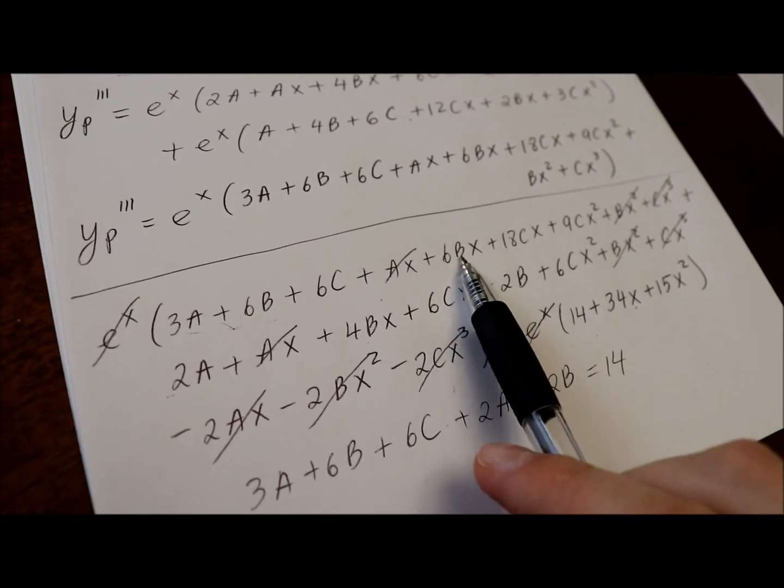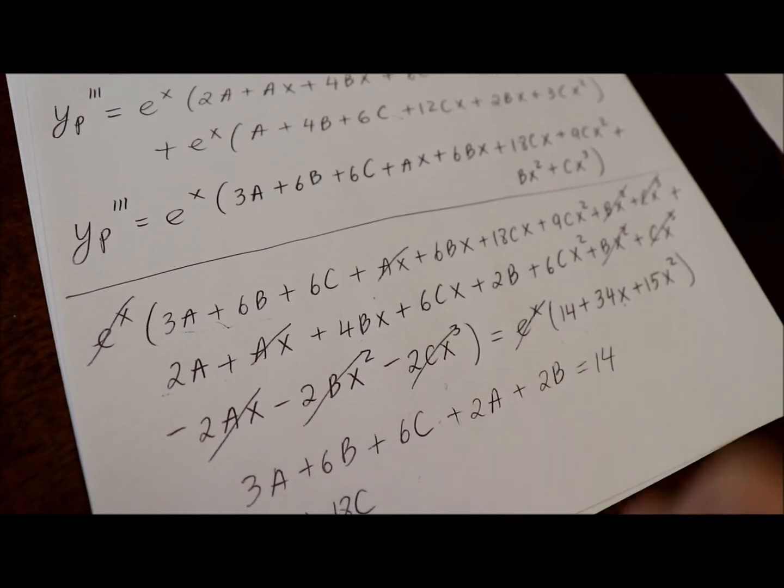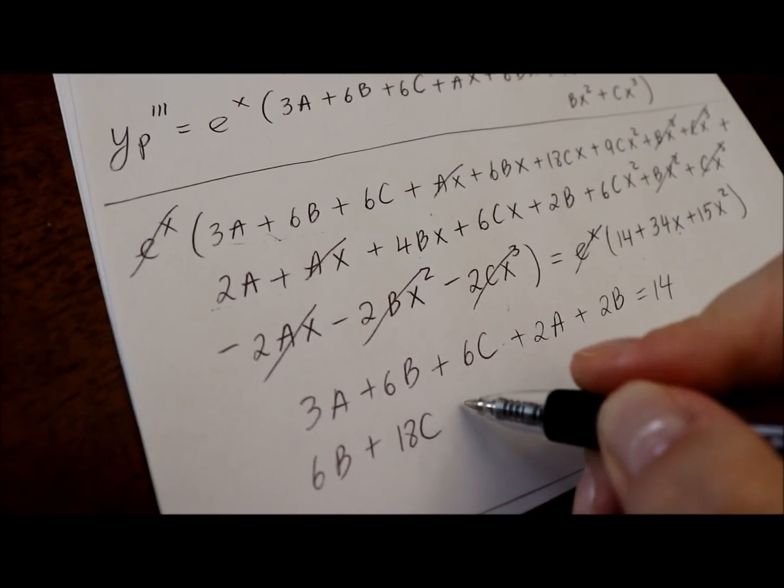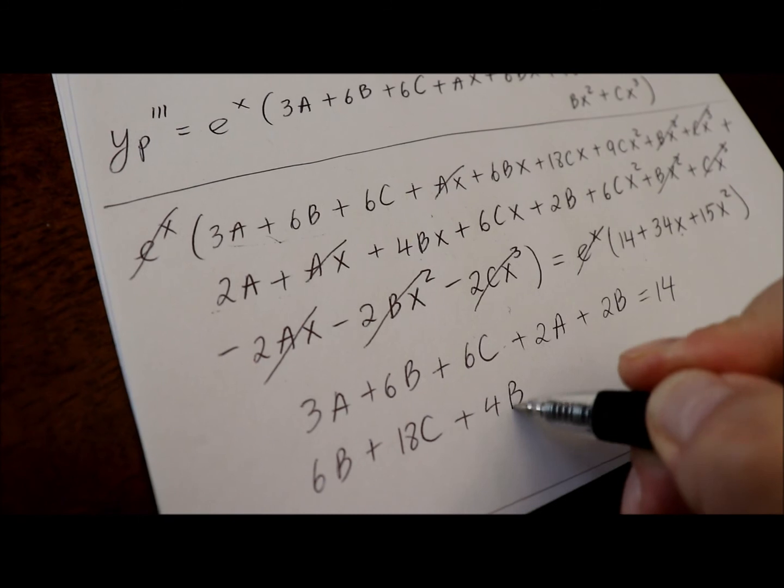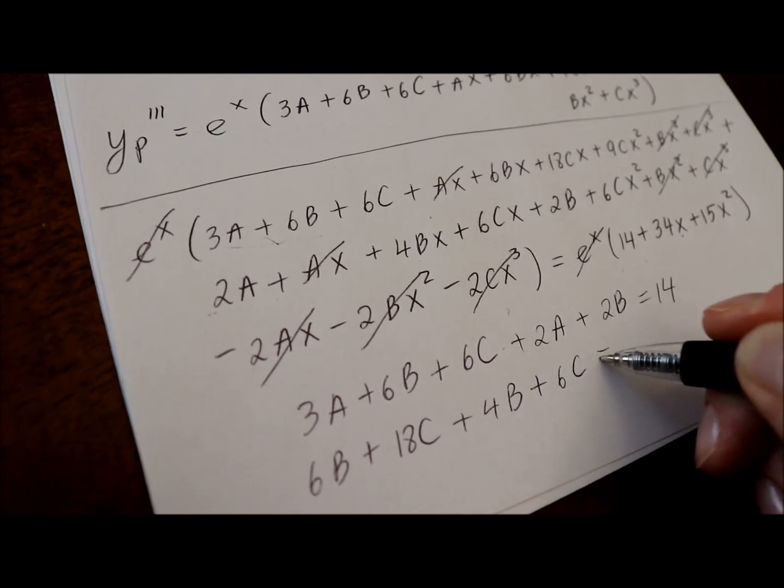terms with x, the coefficients are 6b plus 18c plus 4b plus 6c equals 34.